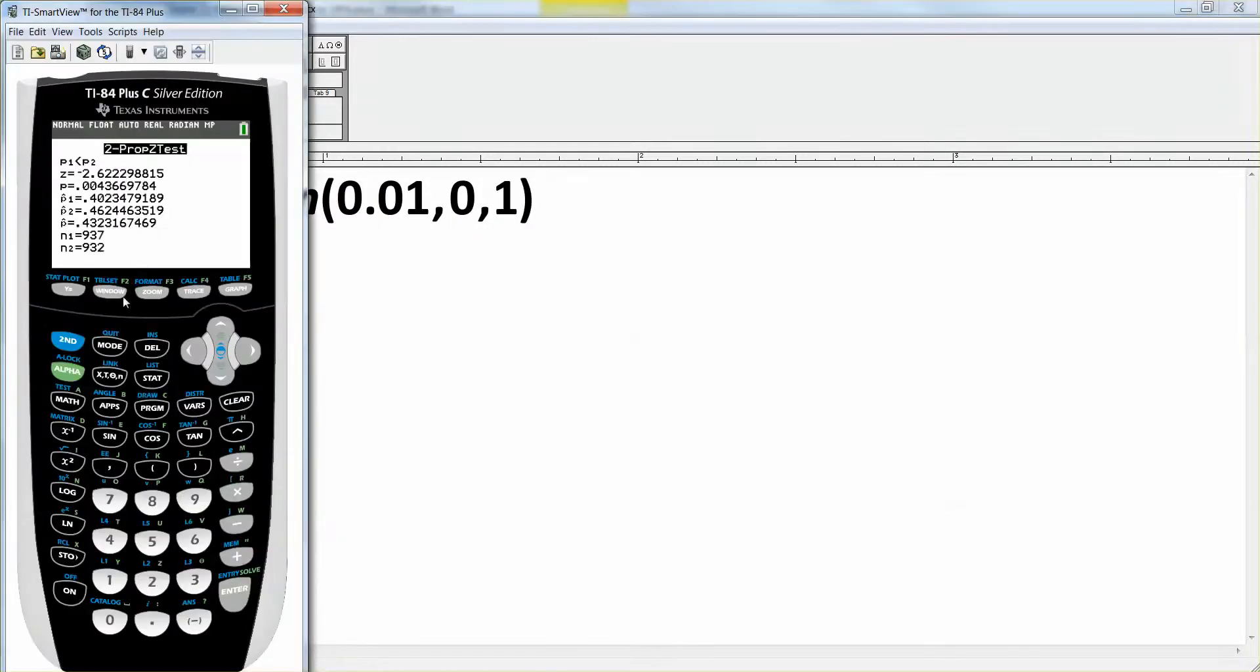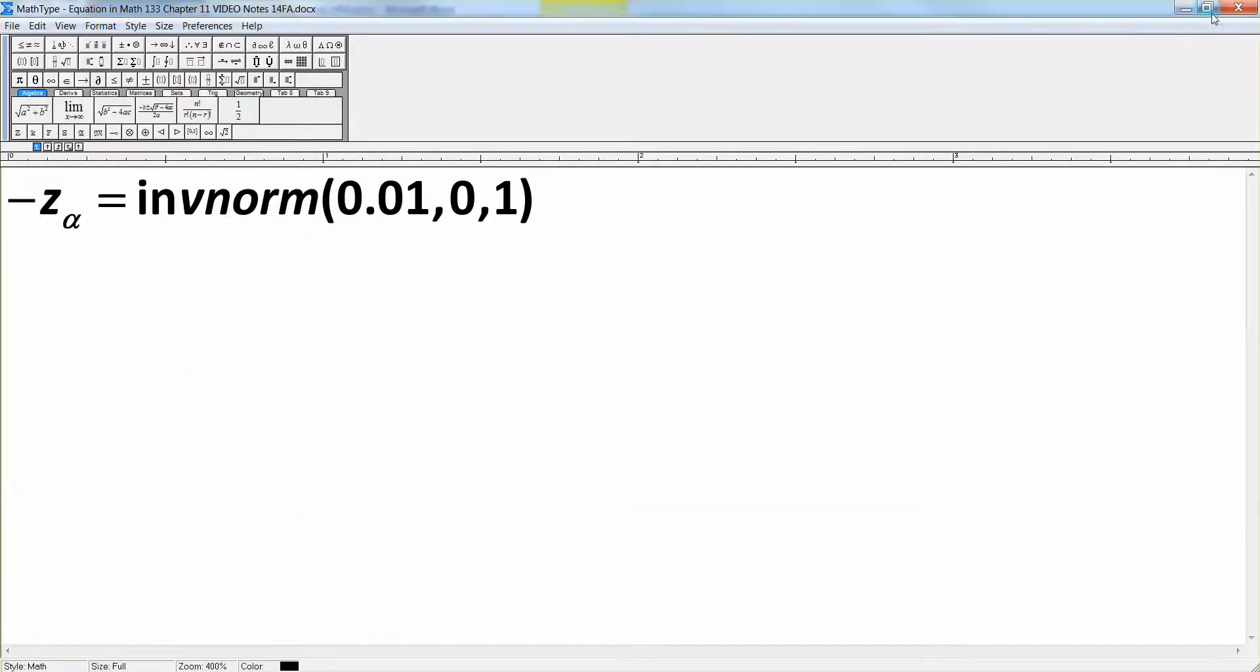All right, so let me grab the calculator. Inverse norm, number 3, 0.01, enter, negative 2.326. All right.